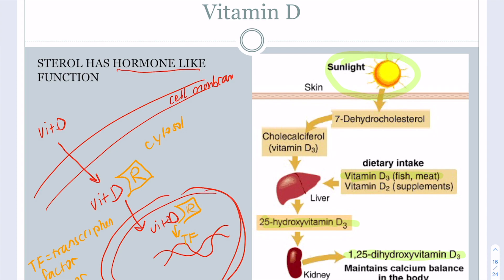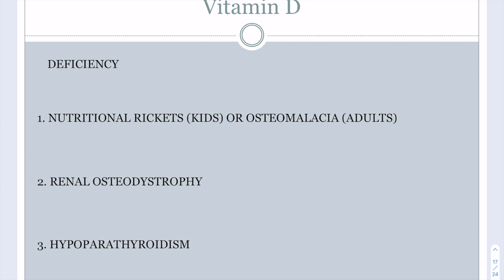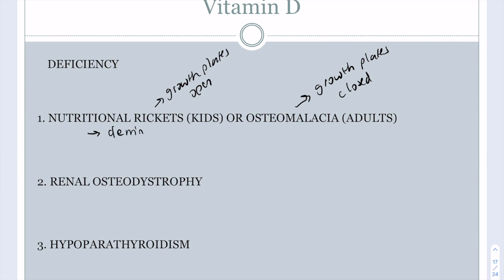Vitamin D deficiencies produce nutritional rickets in children, when growth plates are open, or osteomalacia in adults, when growth plates are closed. Both are associated with vitamin D deficiency and lead to demineralization of bone. Children will have stunted growth and can develop skeletal deformities.